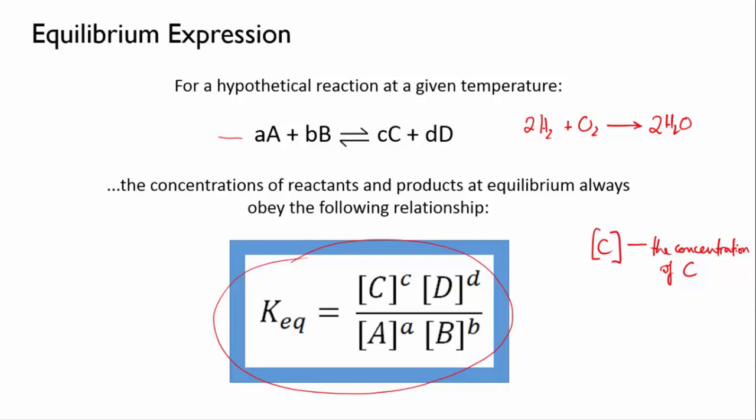You take the concentration of the products at equilibrium, that's C and D, and you put them over the concentrations of the reactants at equilibrium, that's A and B, and you raise each concentration to a power equal to its stoichiometric coefficient. So in the original equation, the stoichiometric coefficient of chemical C was little c, so we raise the concentration of chemical C to the power of little c, and also for D, A, and B.